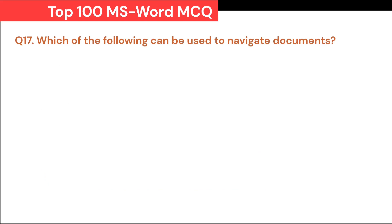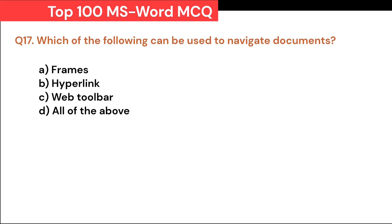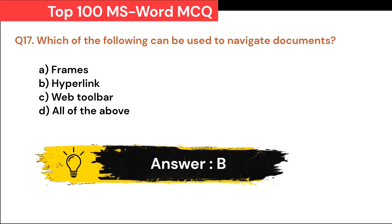Which of the following can be used to navigate documents? A. Frames. B. Hyperlink. C. Web toolbar. D. All of the above. Correct answer is B. Hyperlink.